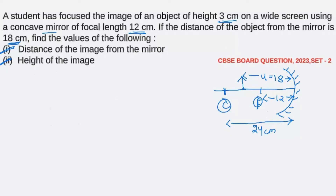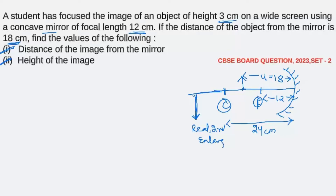We have to find out where our image will be formed and what will be the height. If you remember the ray diagrams studied in the theory, when an object is situated between C and F, the image should be formed behind the center of curvature — somewhere here — and the image should be enlarged. It should be real, inverted, and enlarged.